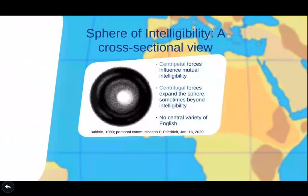Here's the visualization of the sphere of intelligibility — this is a cross-sectional view. We have the centripetal forces, which influence mutual intelligibility, the push towards the center. And then we also have centrifugal forces, which expand the sphere, sometimes beyond intelligibility. This occurs when people use their agency to push the bounds beyond intelligibility, and what happens is you create creoles and pidgins by doing that.